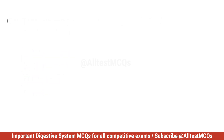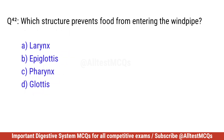Question number forty-two. Which structure prevents food from entering the windpipe? Correct option is B. Epiglottis.